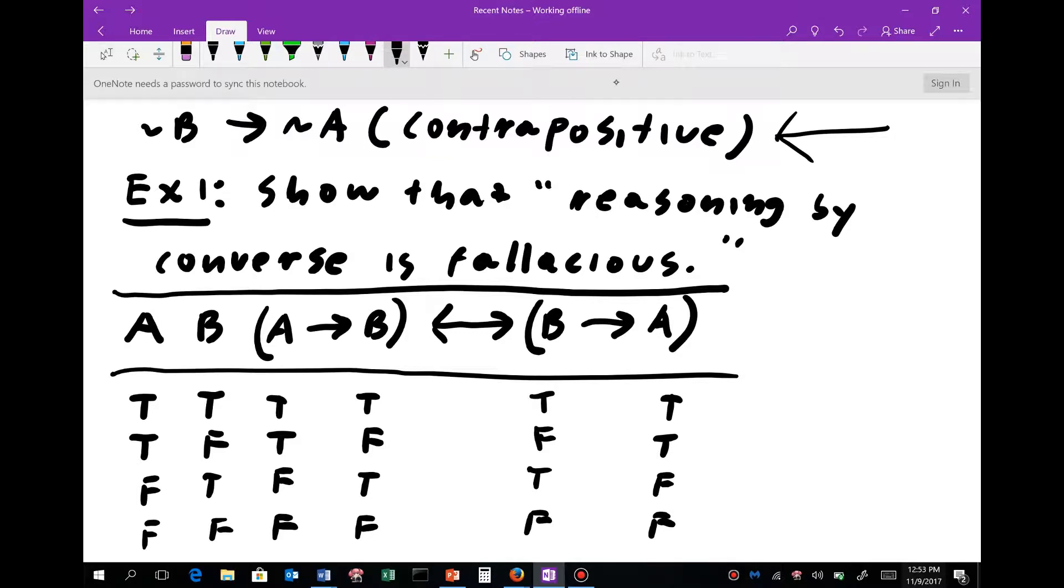So step two, I'll work from left to right, but it doesn't really matter which direction we work. True implies true is true. True implies false is false. And false implies anything is true. So that should be pretty quick for you by this point.